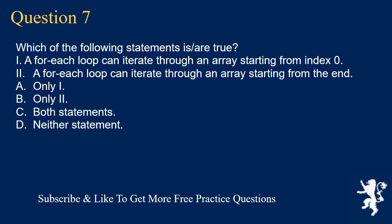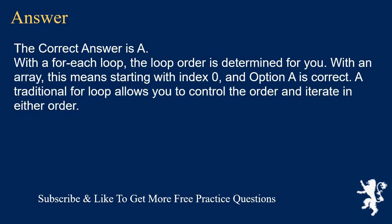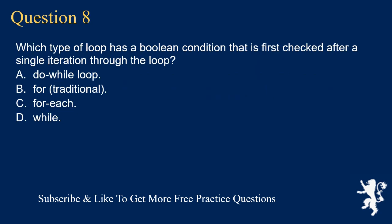Question 7. Which of the following statements is/are true? I. A for-each loop can iterate through an array starting from index 0. II. A for-each loop can iterate through an array starting from the end. A. Only I. B. Only II. C. Both statements. D. Neither statement. The correct answer is A. With a for-each loop, the loop order is determined for you. With an array, this means starting with index 0, and option A is correct. A traditional for loop allows you to control the order and iterate in either direction.